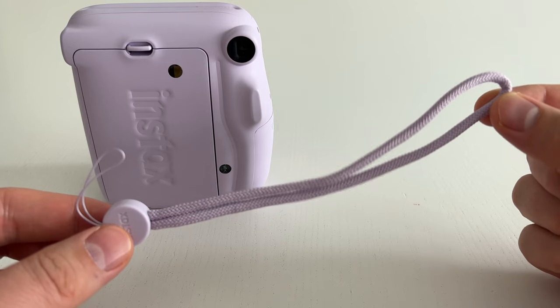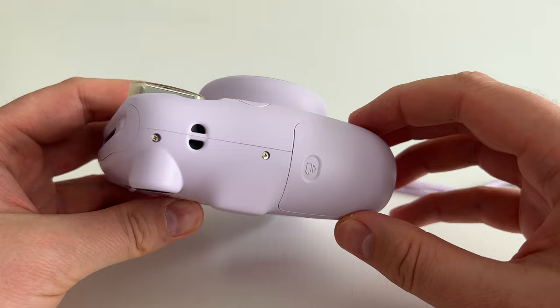In this video I'll show you how to attach the strap to the Instax Mini 11. You can attach the strap on either side of the camera. There's an attachment point right here and also on the other side right here.